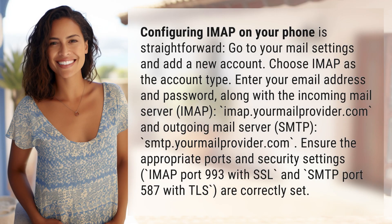Configuring IMAP on your phone is straightforward. Go to your mail settings and add a new account. Choose IMAP as the account type. Enter your email address and password.